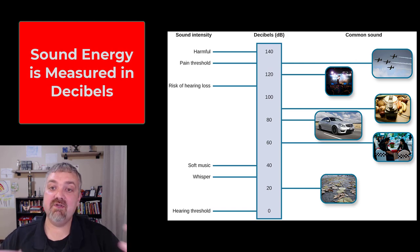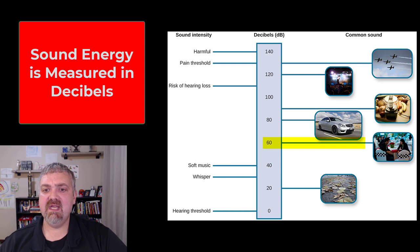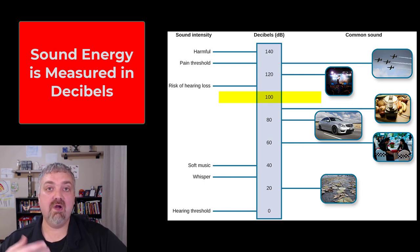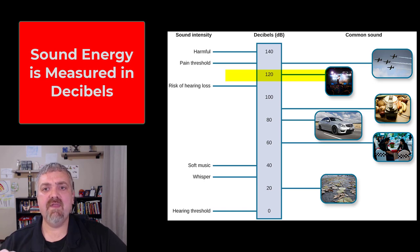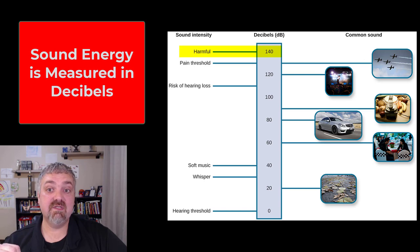Sound energy is measured in decibels. Average household noise or soft music is around 40 decibels. A normal quiet conversation is around 60 decibels. A chainsaw or leaf blower is a little over 100 decibels. A rock concert is about 120 decibels — sporting events and concerts generally fall in that range. A gunshot can reach 140 decibels, which is very harmful and painful to the ears.